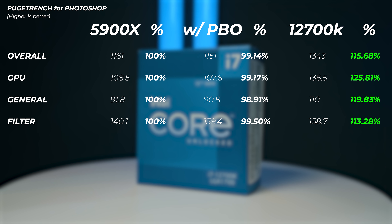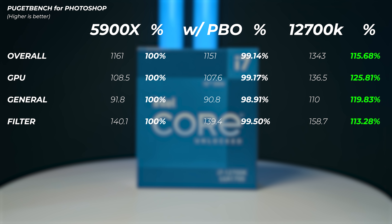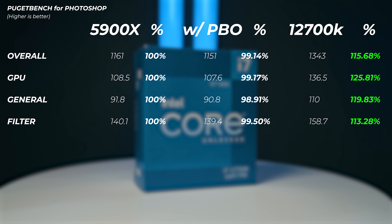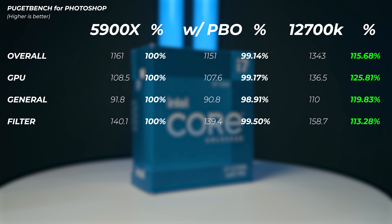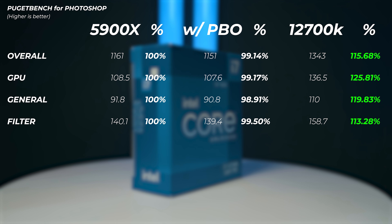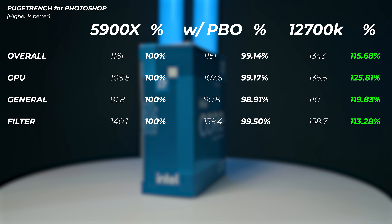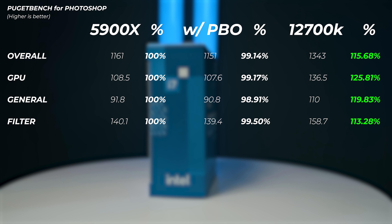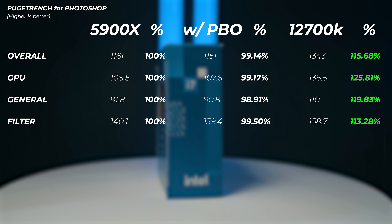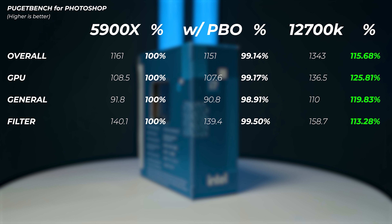Moving on to Photoshop and photo editing performance. Enabling PBO actually causes a slight drop — within margin of error, but I wouldn't recommend enabling PBO when editing in Photoshop. The 12700K is 15.7% faster in the overall score. Interestingly, the GPU score is 25.8% faster on the Intel system even though we're using the same GPU, suggesting the 12700K really accelerates GPU performance in this application.